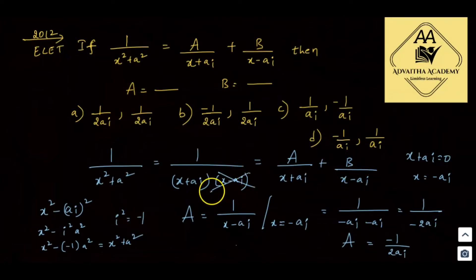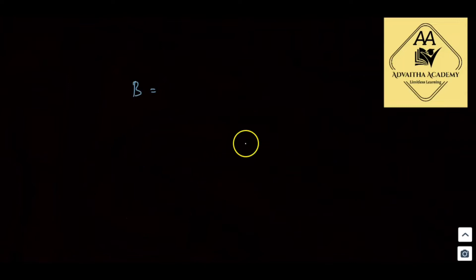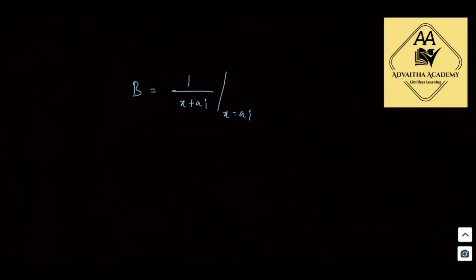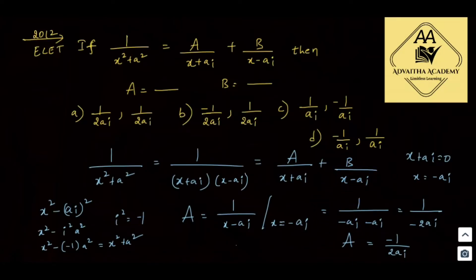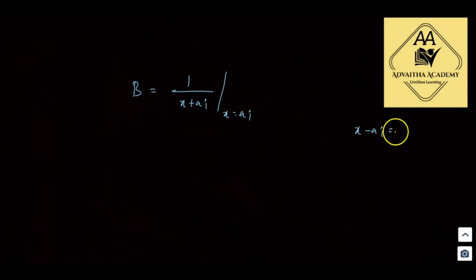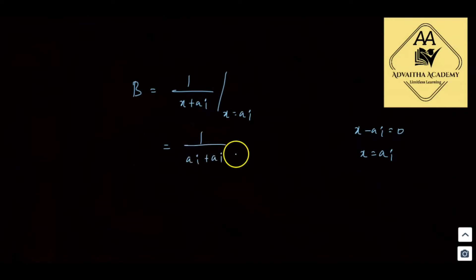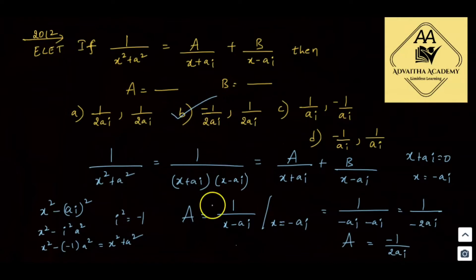Next, to find coefficient B, the term under B is (x - ai), so set x - ai = 0, giving x = ai. Covering x - ai and substituting x = ai into 1/(x + ai): we get 1/(ai + ai) = 1/(2ai). So B = 1/(2ai). Therefore A = -1/(2ai) and B = 1/(2ai). Option B is correct.